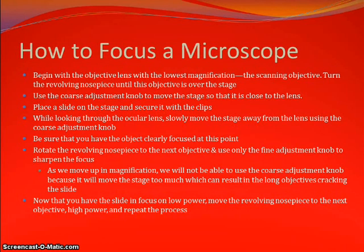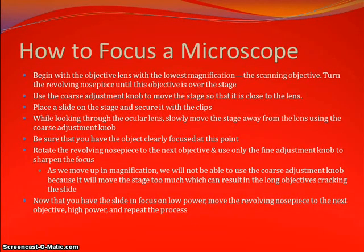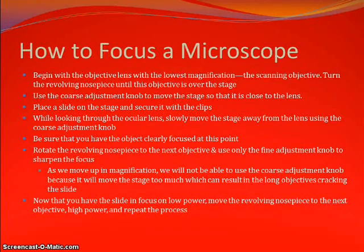When using a microscope, it's very important to know how to focus it correctly to observe your specimen to the best of your ability. These are the steps we used: we began with the objective lens at the lowest magnification, called the scanning objective, and turned the revolving nosepiece until it was over the stage. We used the coarse adjustment knob to move the stage close to the lens, placed the slide on the stage, secured it with stage clips, and while looking through the ocular lens, slowly moved the stage away from the lens to clearly focus the sample. Once focused, we rotated the revolving nosepiece to the next objective lens and used the fine adjustment knob to sharpen the image.